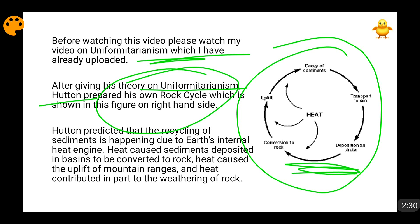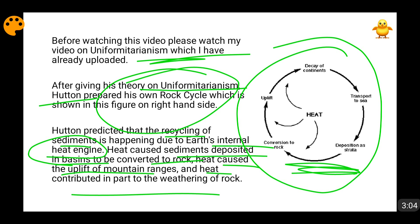At that point of time, in the initial part of the 19th century and the end of the 18th century, science was not developed. Things which we know today seemed impossible back then because the technology was not at all developed. So Hutton predicted that recycling of sediments is happening due to earth's internal heat energy — the earth's internal heat engine — and that heat is causing everything. That heat is causing sediments deposited in the basins to be converted to rocks. Heat caused the upliftment of mountain ranges and contributed in part to the weathering of rocks. So Hutton said that heat in the interior of the earth is responsible for all the processes, and obviously the sediment going to the sea is being changed into rock by earth's internal heat.